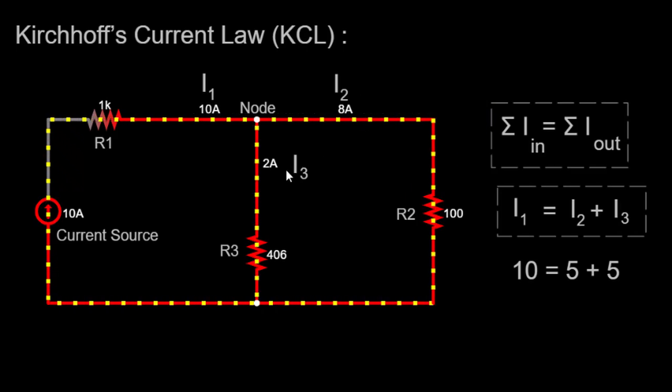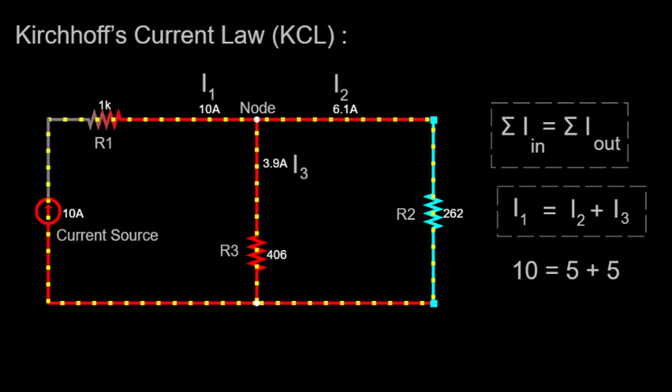Regardless of the specific resistance values, the total current entering the node, I1, will always equal the total current exiting the node, I2 plus I3. This observation reinforces the validity of Kirchhoff's Current Law, as it consistently upholds the principle of charge conservation.